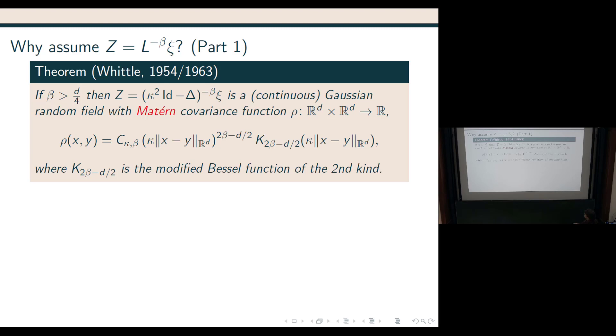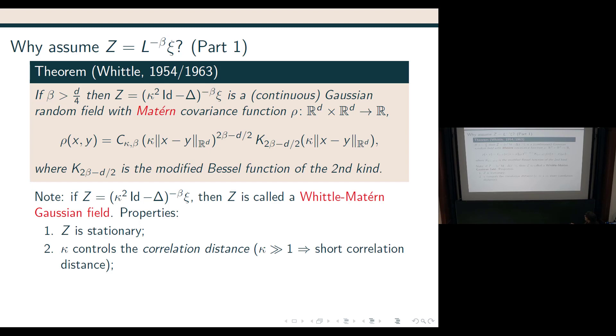So, what we see, in particular, this then is called Whittle-Matérn Gaussian field. And what we see is that, well, first of all, clearly that was truly expected. It's a stationary random field. The argument only depends on, so the covariance only depends on the difference.